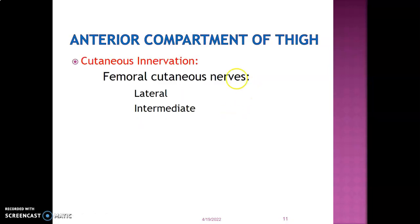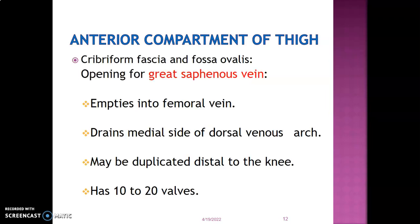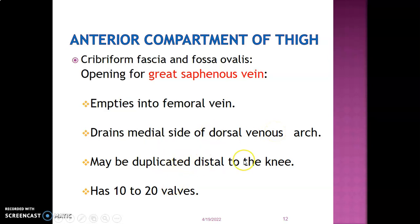Moving to the anterior compartment of the thigh: the cutaneous innervation is from the lateral, intermediate, medial, and posterior cutaneous nerves of the thigh. Within the anterior compartment, there is the cribriform fascia — the fascia lata is modified to form cribriform fascia, which is perforated fascia at the femoral triangle because it contains the opening of the saphenous vein as it empties into the femoral vein. The great saphenous vein drains the medial side of the dorsal venous arch and may be duplicated distal to the knee. It usually has 10 to 20 valves.